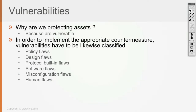Protocol built-in flaws: each protocol has a lot of flaws. For example, HTTP has built-in flaws, SSL has built-in flaws, TLS has built-in flaws — which occurred because of bad programming or failure to foresee how that protocol would be used in the end. Software flaws can be in the format of bugs. A software bug is when the system is configured to behave in a certain way, but ends up behaving in a different way — that's a software flaw or bug.